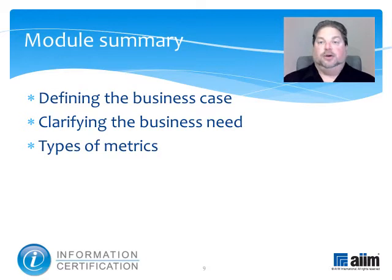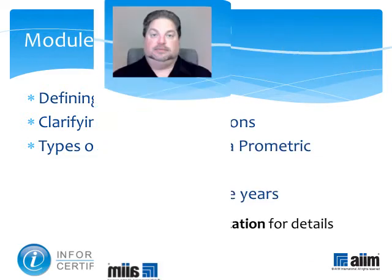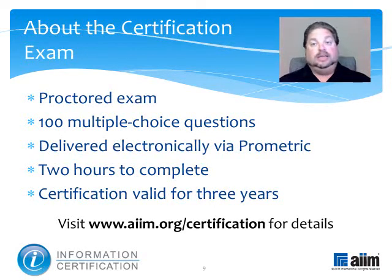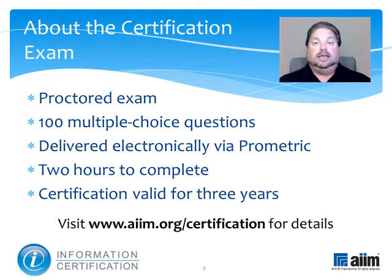This module explored how to clarify your organization's needs and to differentiate from among the different types of metrics available. Having completed it, you may next wish to view the module on the elements and expertise needed to develop a solid business case and to perform a sound risk analysis. This proctored test consists of 100 multiple choice questions and is delivered electronically by Prometric. You'll have two hours to complete it, and upon passing, you'll earn a professional certification that's valid for three years. For more information, please visit www.aim.org/certification.